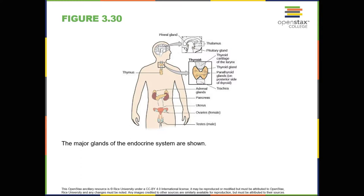The endocrine system consists of a series of glands that produce chemical substances known as hormones, as shown in figure 3.30. Like neurotransmitters, hormones are chemical messengers that must bind to a receptor in order to send their signal. However, unlike neurotransmitters, which are released in close proximity to cells with their receptors, hormones are secreted into the bloodstream and travel throughout the body, affecting any cells that contain receptors for them. Thus, whereas neurotransmitters' effects are localized, the effects of hormones are widespread.